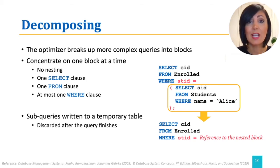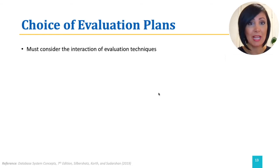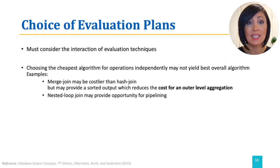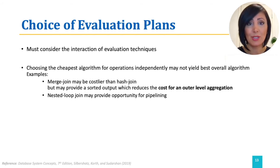The saved results could be discarded after the whole query is finished. For evaluation of a whole query, the optimizer still needs to consider the interaction of evaluation techniques. This is because just picking the cheapest plan for operations in one block may not yield the best algorithm for the overall query. For example, using hash join might be the best operation algorithm with the lowest cost, but merge join might provide the opportunity to return a sorted output, which may be usable in the outer query to help enhance overall query performance.